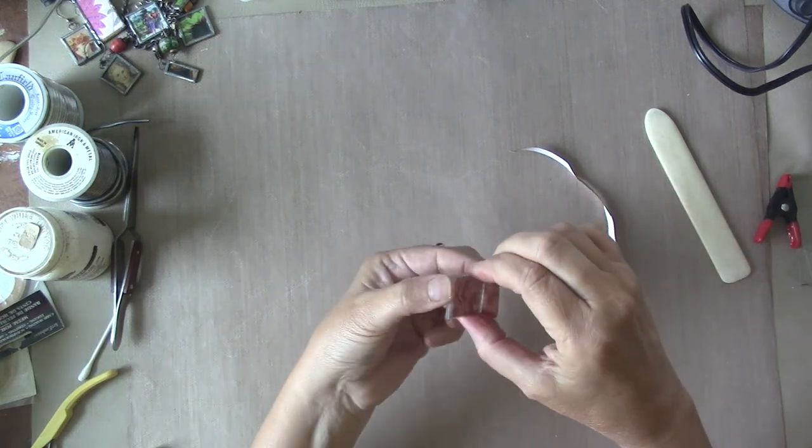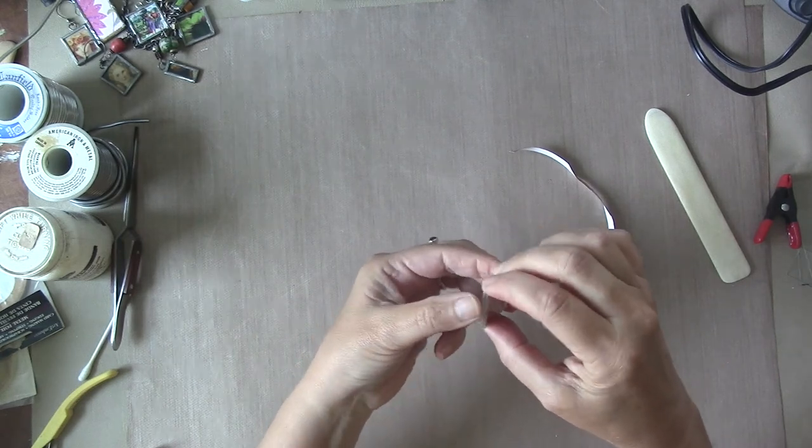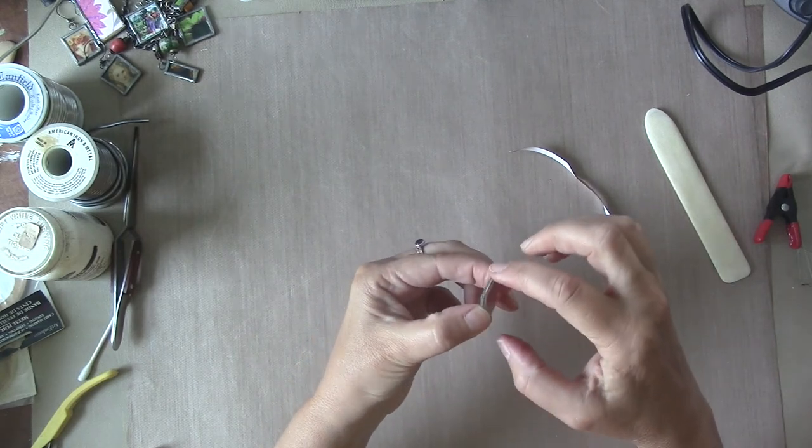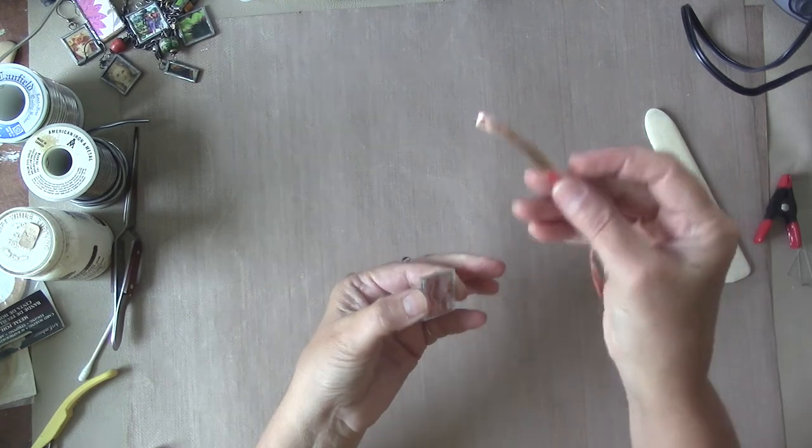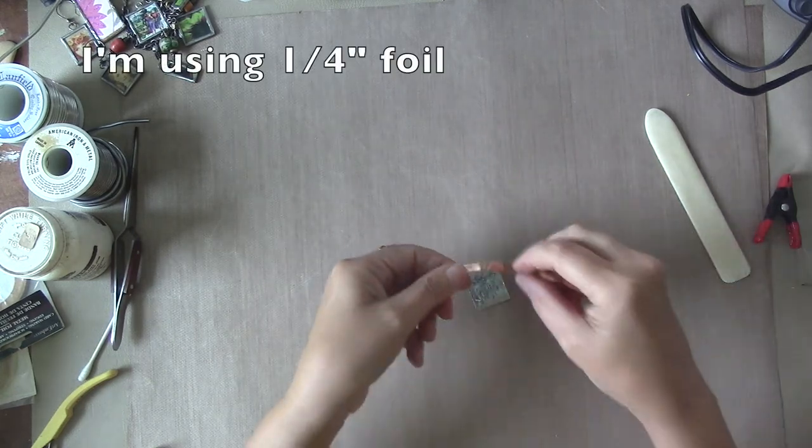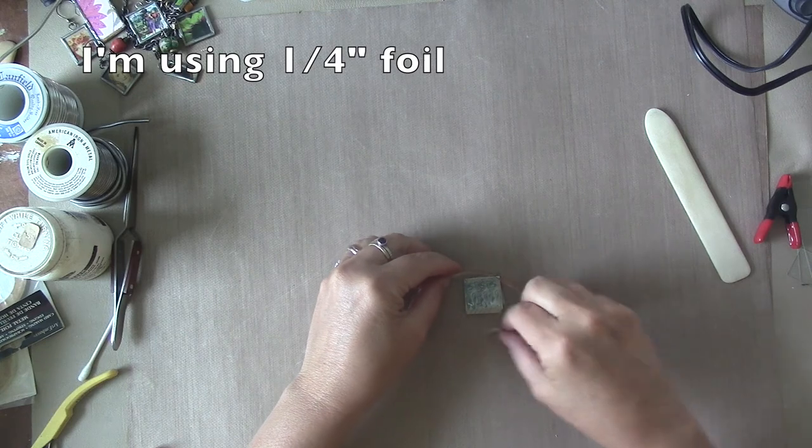And you want to make sure that the paper, the stamp, whatever the image is, is not sticking out past the glass. Then I just cut myself a little piece of copper foil, make sure that's going to go all the way around.